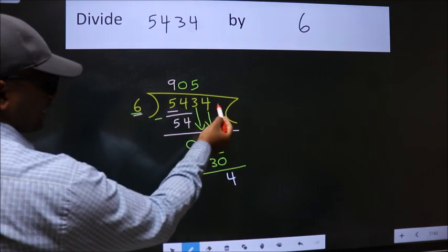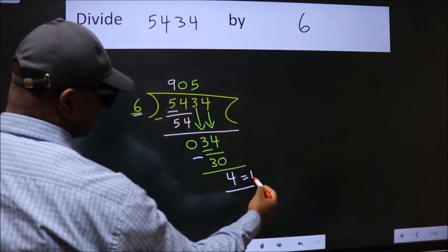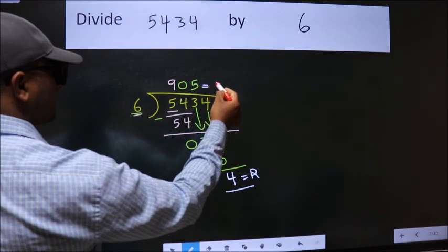No more numbers to bring it down, so we stop here. This is our remainder. This is our quotient.